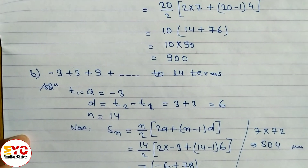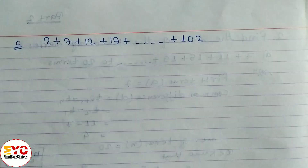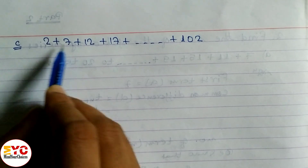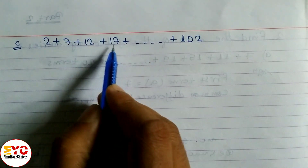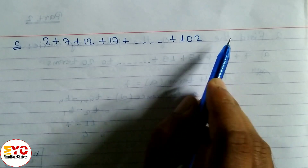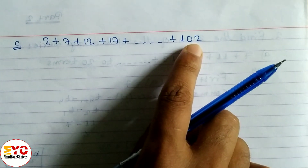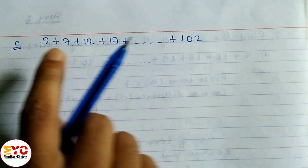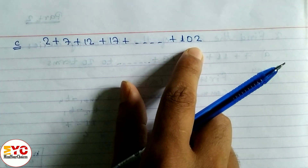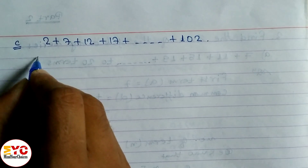Hope you understand question B. Now look at question C, which is different from A and B. The series is 2 + 7 + 12 + 17 up to 102. The number of terms is not given — 102 is the last term, not the number of terms.